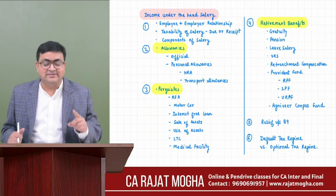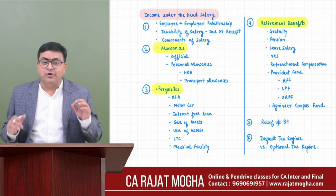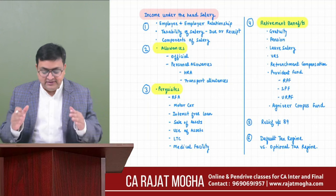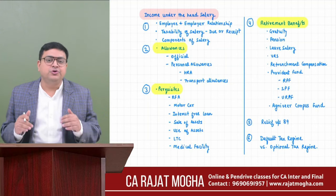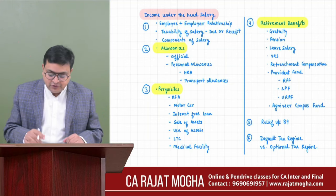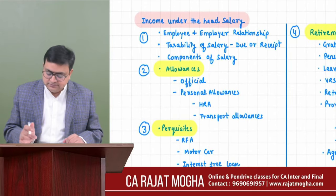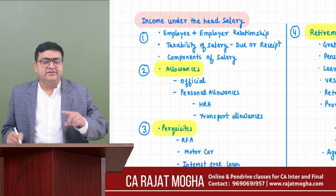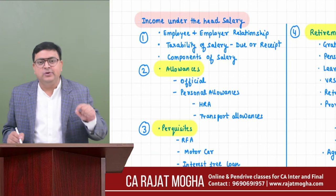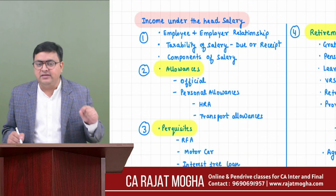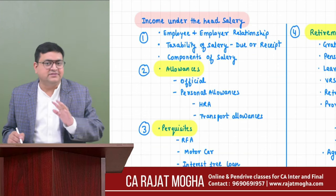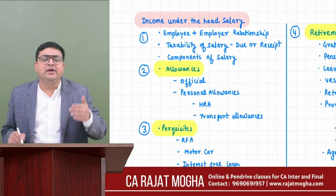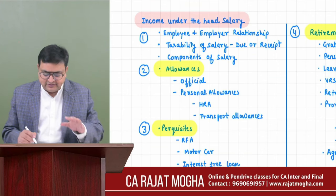Let's understand what things you should know to be comfortable in this chapter. First, you should understand the employee and employer relationship, because if there is a relationship of master and servant, only then can income be taxable under the head salary. If this relationship is not there, that income will go under any other head.